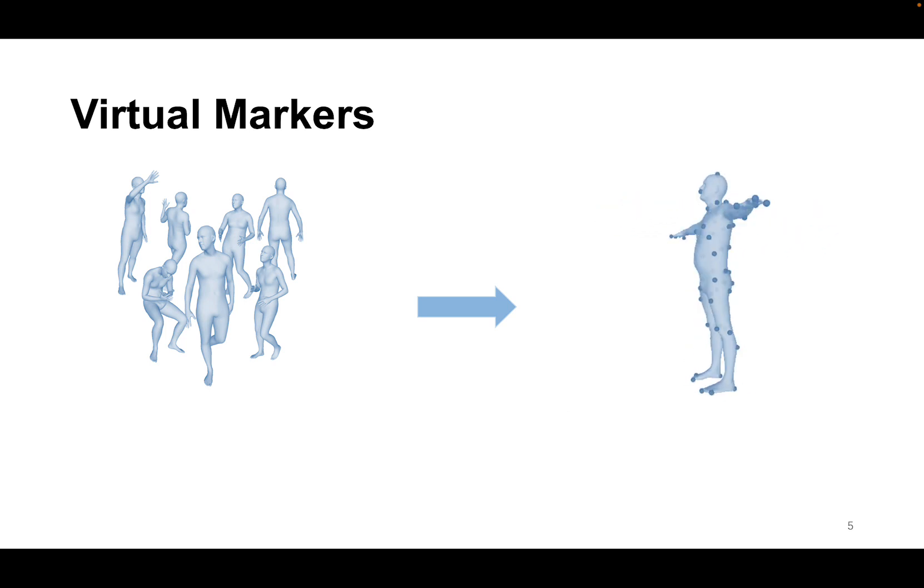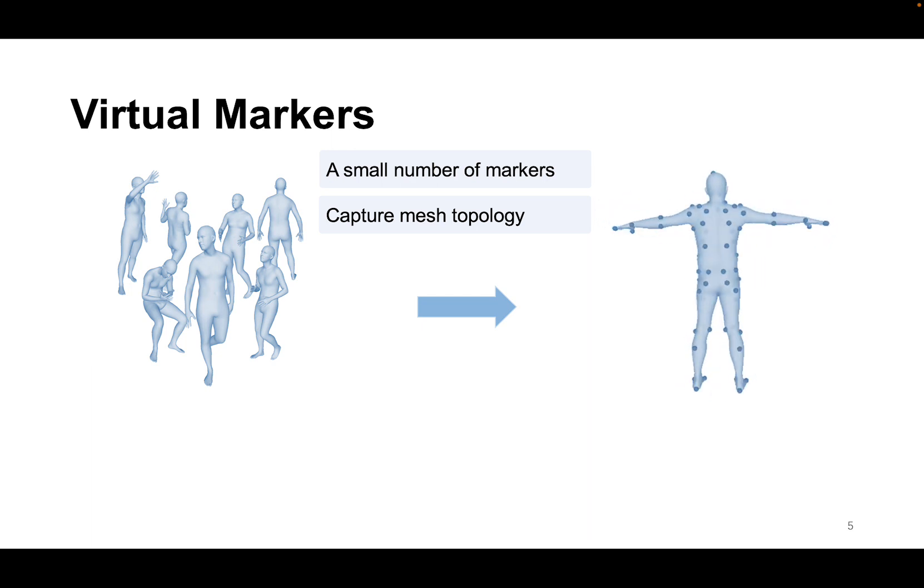The desired virtual markers should satisfy several requirements. First, the number of markers should be much smaller than that of the mesh vertices so that we can efficiently estimate their 3D positions. Second, the markers should capture the mesh topology so that the intact mesh can be accurately regressed from them. Third, the virtual markers have distinguishable visual patterns so that they can be detected from images.